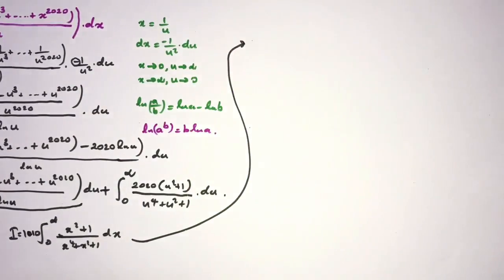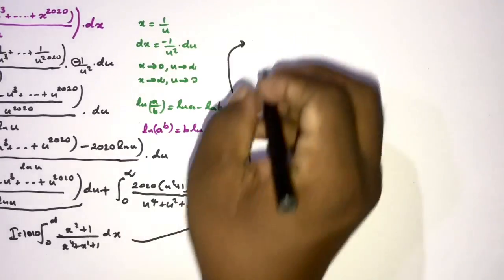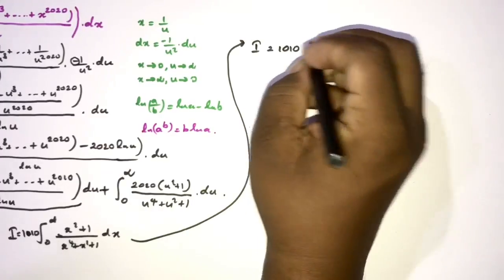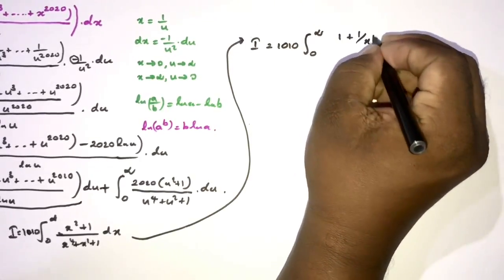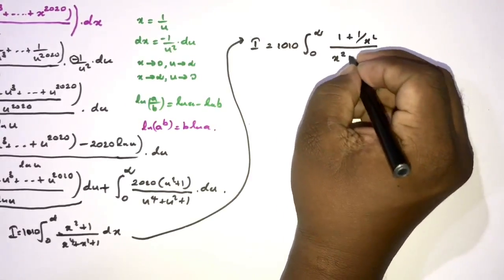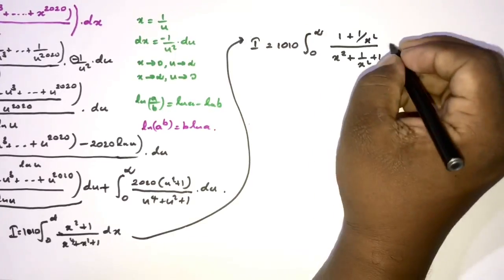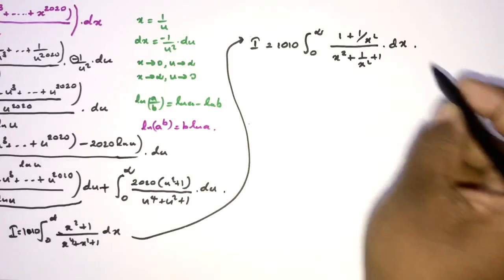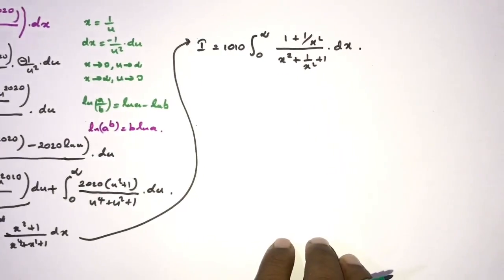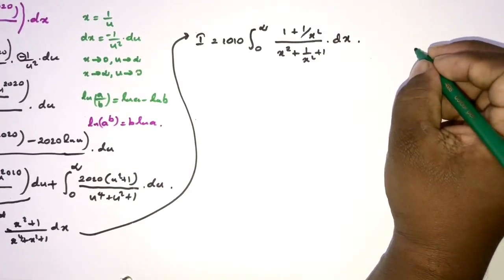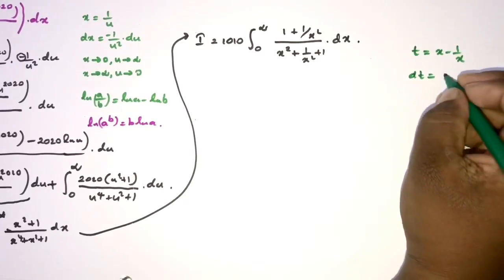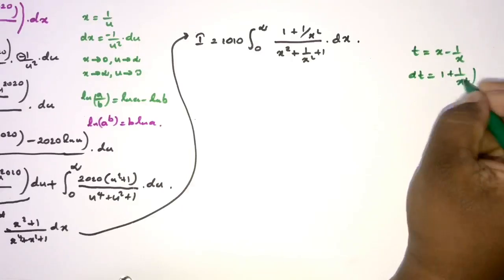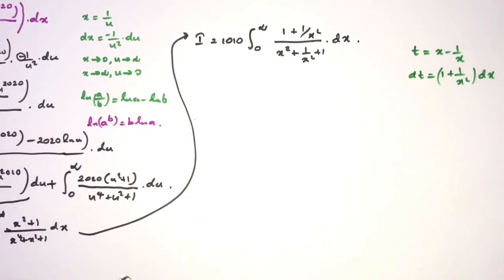Now we evaluate this integral. We divide both numerator and denominator by x squared, giving I equal to 1010 times the integral from 0 to infinity of (1 plus 1 over x squared) over (x squared plus 1 over x squared plus 1) dx. To evaluate this, we take the substitution t equal to x minus 1 over x, so dt equals (1 plus 1 over x squared) dx.